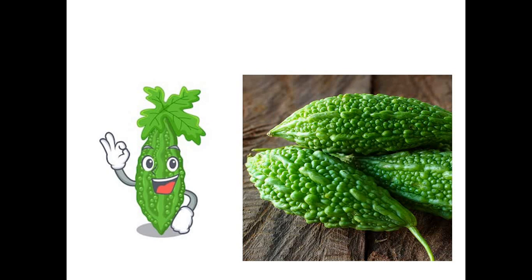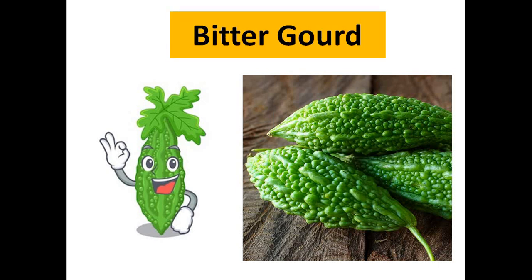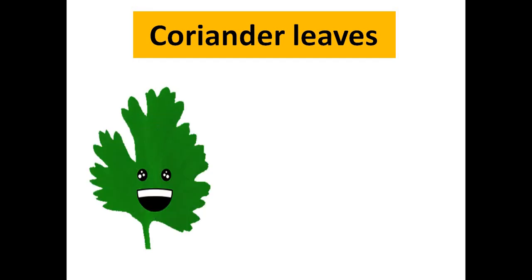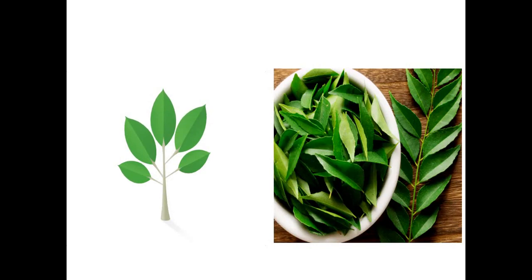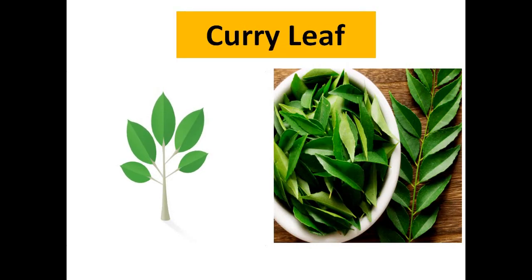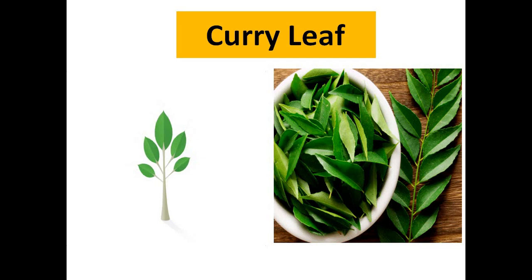Karela ko English mein 'bitter gourd' bolte hain. Dhaniya patti ya kothmir ko 'coriander leaves' kaha jata hai. Kari patta — in English we call it 'curry leaf.'